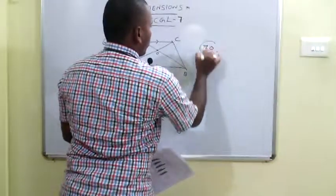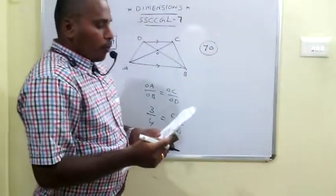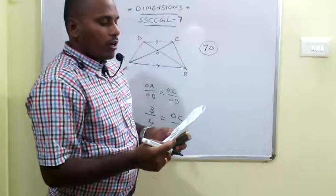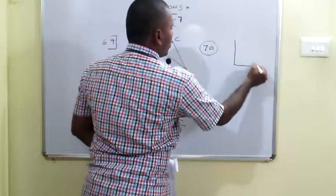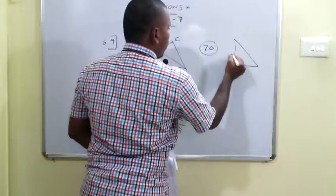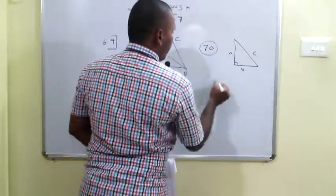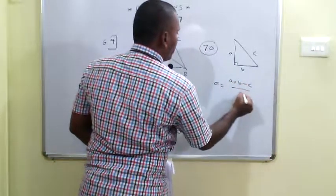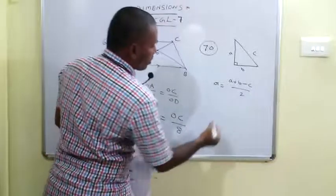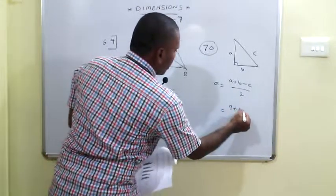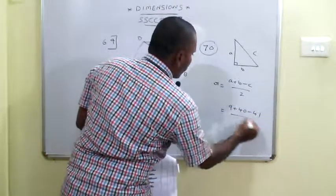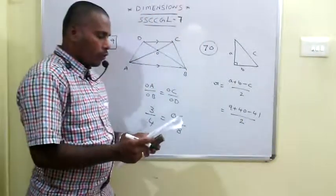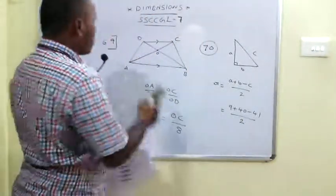The 70th problem: The inradius of a right-angle triangle with sides 9, 40 and 41. The direct rule is: inradius = (A + B - C) / 2, where C is the hypotenuse. So inradius = (9 + 40 - 41) / 2 = 8 / 2 = 4. The answer is 4.